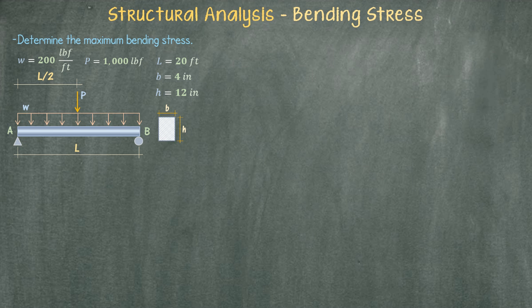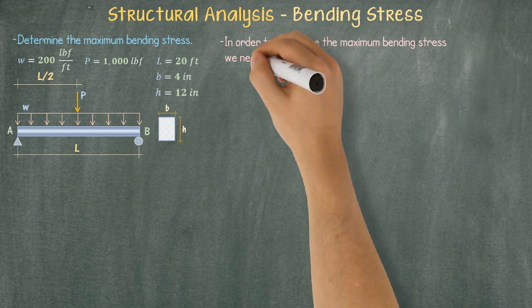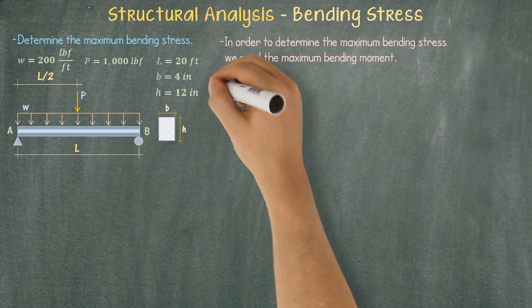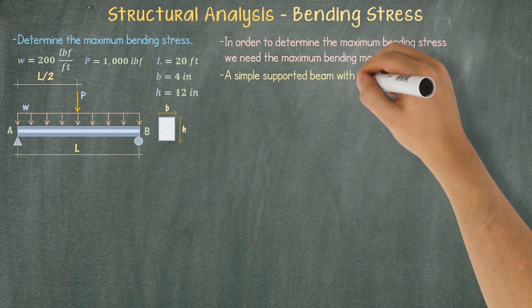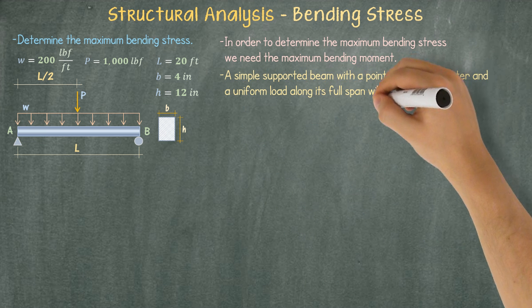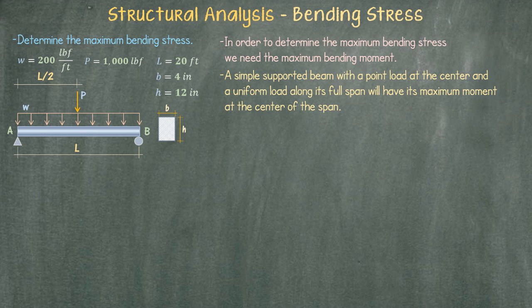Before doing any calculations we need to settle a couple of items. First, in order to determine the maximum bending stress we need the maximum bending moment. Second, a simple supported beam with a point load at the center and a uniform load along its full span will have its maximum moment at the center of the span. Now that we know what to aim for we can start our calculations.